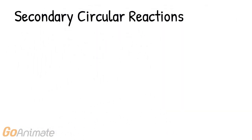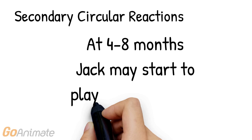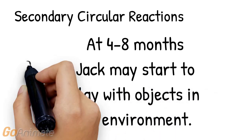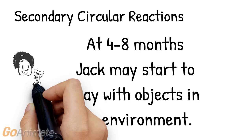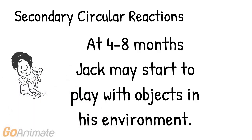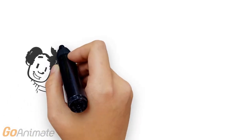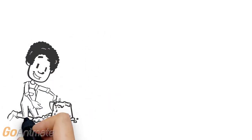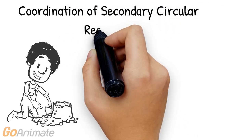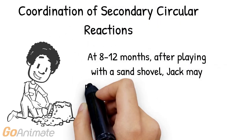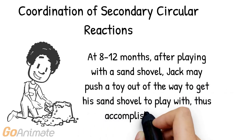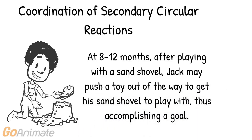A secondary circular reaction is when a child repeats the same action with an object, such as a toy, without an intended goal. Secondary circular reactions generally start when the child is between four to eight months. Coordination of secondary circular reactions is when a baby learns to accomplish a goal — for example, Jack pushing an object out of the way to get to his favorite toy, the sand shovel.